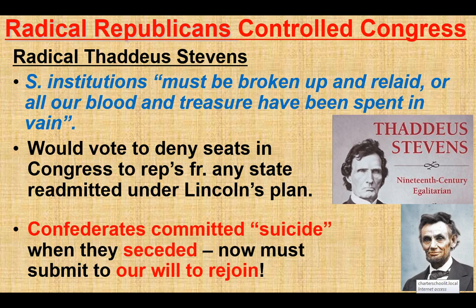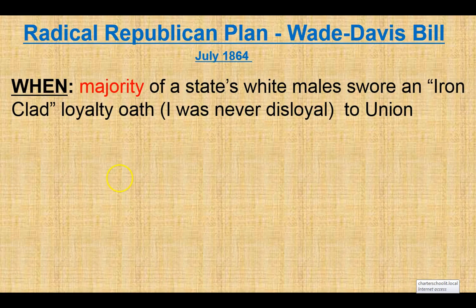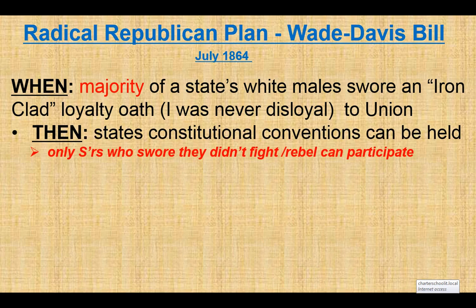The Radical Republicans argued that the Confederates committed suicide when they seceded — now they must rejoin and submit to Congress's rules to prove they are worthy of being part of the Union. So the Radical Republicans came up with their own plan: the Wade-Davis Bill. When a majority of a state's white males swore an ironclad oath saying they were never disloyal to the Union, and they rationalized that there must be more than 10% of the population who fit that standard — 10% is just too easy.